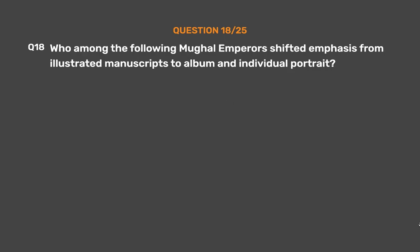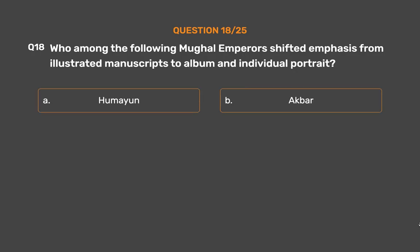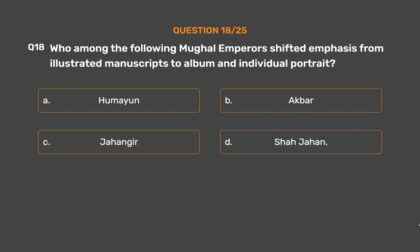Question No. 18: Who among the following Mughal emperors shifted emphasis from illustrated manuscripts to album and individual portrait? Option A: Humayun. Option B: Akbar. Option C: Jahangir. Option D: Shah Jahan.